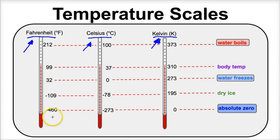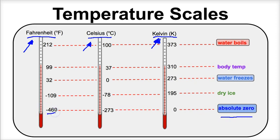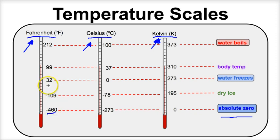If we start from the bottom, or the coldest possible temperature in the known universe, which is referred to as absolute zero — on the Fahrenheit scale, that is negative 460 degrees Fahrenheit. Nothing gets colder. There is no temperature at negative 500; that does not exist. Negative 460 degrees Fahrenheit is the coldest possible temperature in the known universe. Water is going to freeze at 32 degrees Fahrenheit, and it's going to boil at 212 degrees Fahrenheit.